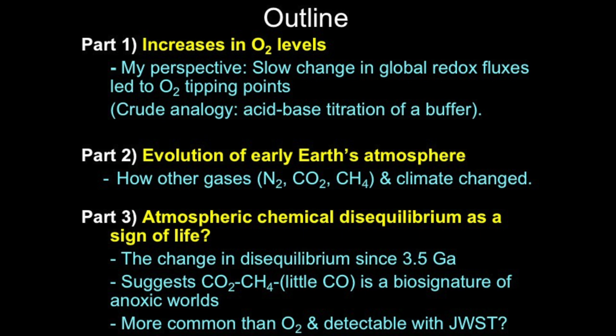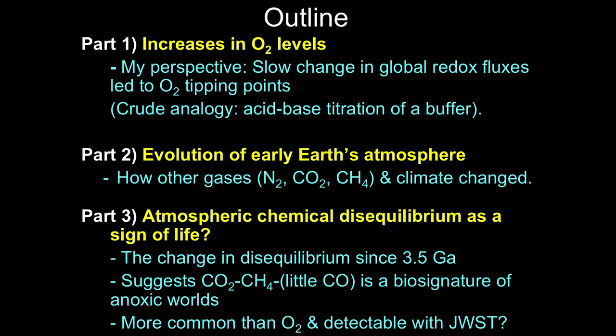The second part is other gases and how the climate changed. The overall point is that for at least half of Earth history we didn't have oxygen, so how might one detect life on other planets in the absence of oxygen? Here I'm going to turn to the concept of chemical disequilibrium as a possible sign of life, and talk about how that's changed in the atmosphere since 3.5 billion years ago, and what that suggests for a possible biosignature on exoplanets without oxygen.